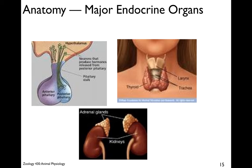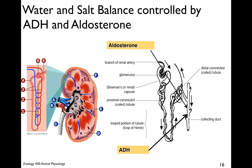Some of the major endocrine organs are the pituitary, hypothalamus, thyroid, and adrenal glands. Water and salt balance is controlled by ADH (antidiuretic hormone) and aldosterone, and they control the permeability of the collecting duct.